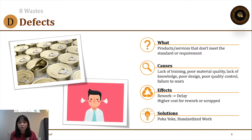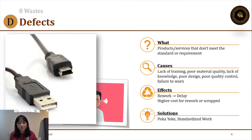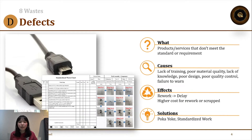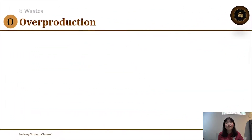There are two lean tool solutions for defects. The first is Poka-Yoke — for example, a USB cable that cannot be inserted into the port in the wrong direction, preventing damage. The second solution is standardized work by applying a Standard Operating Procedure, or SOP.